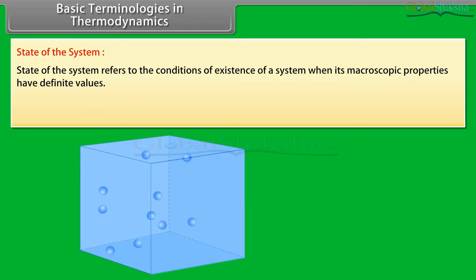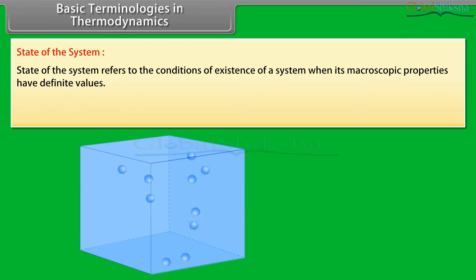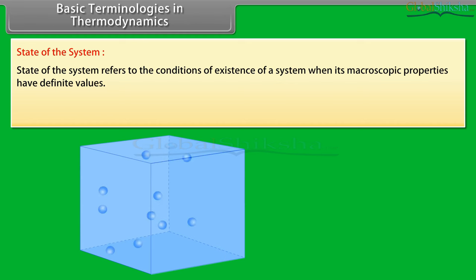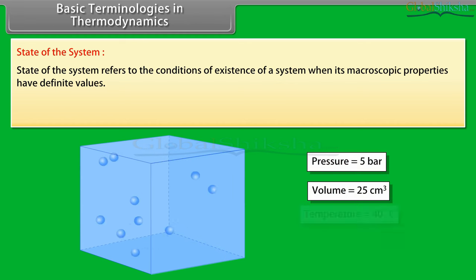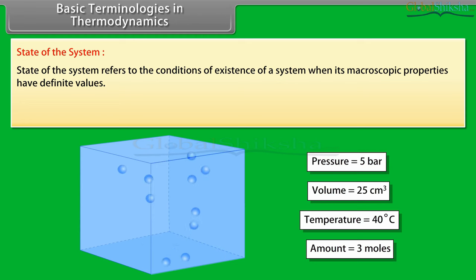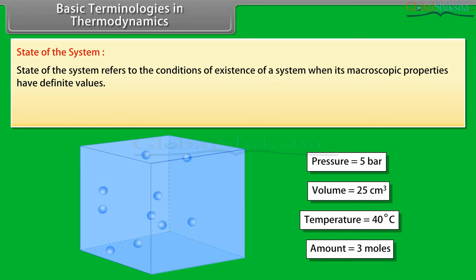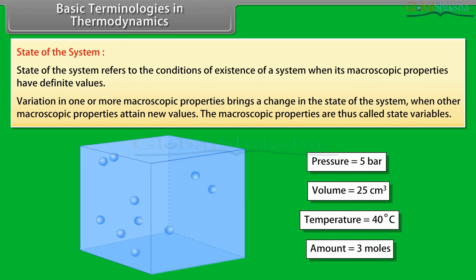State of the system: the state of the system refers to the conditions of existence of a system when its macroscopic properties have definite values. For example, the state of a gaseous system can be defined by its pressure, volume, temperature, and amount.